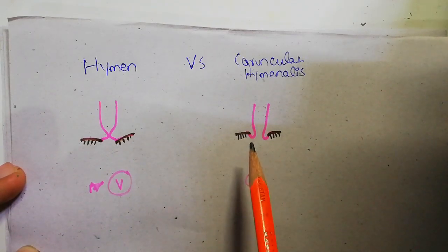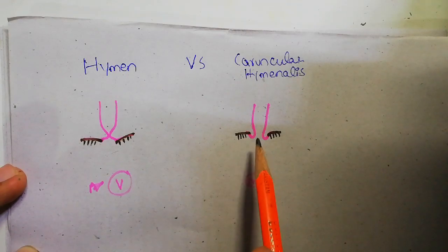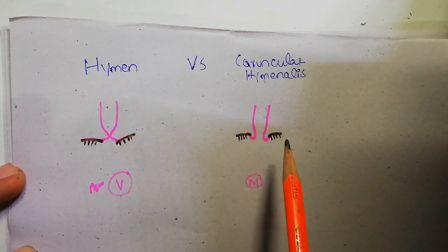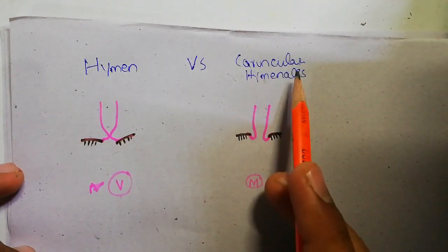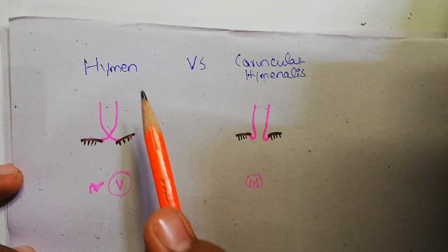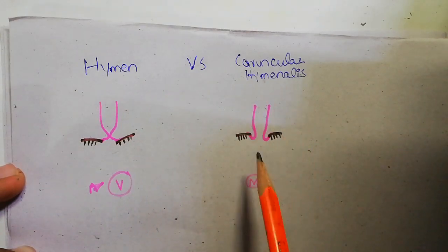Whereas in married female, these two mucosal folds now project outside and now they show two projections on external vaginal orifice. They do not actually close the lumen, they are just projections now on the outside, and now they are called caruncular hymenalis. So hymen is present in virgin female and in married female it is converted into caruncular hymenalis.